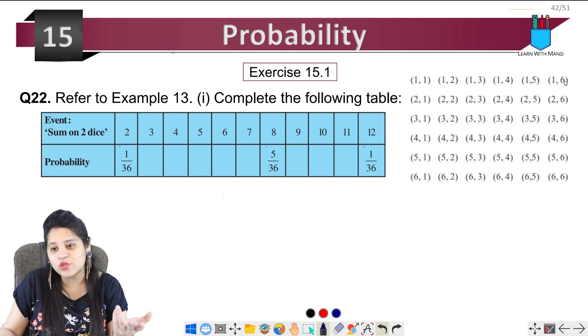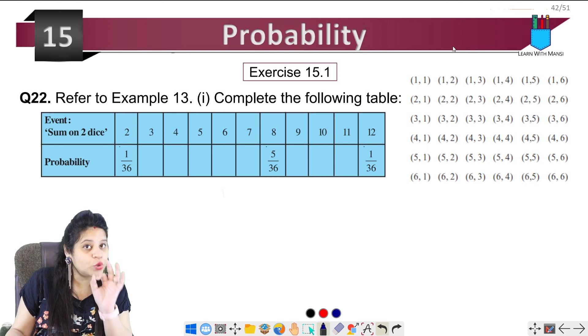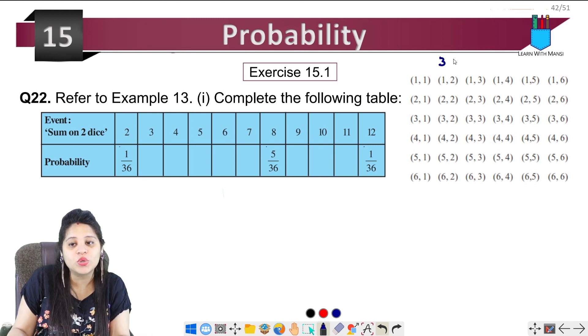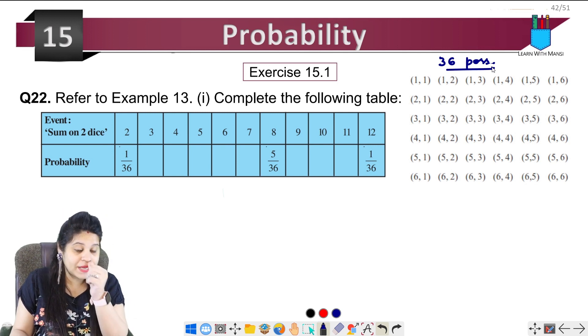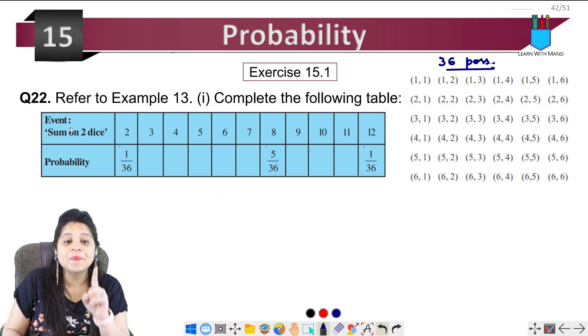These are all possibilities when we have two dice thrown. Then we have total 36 possibilities that all these things can be possible. Now what do we have to complete the table here?